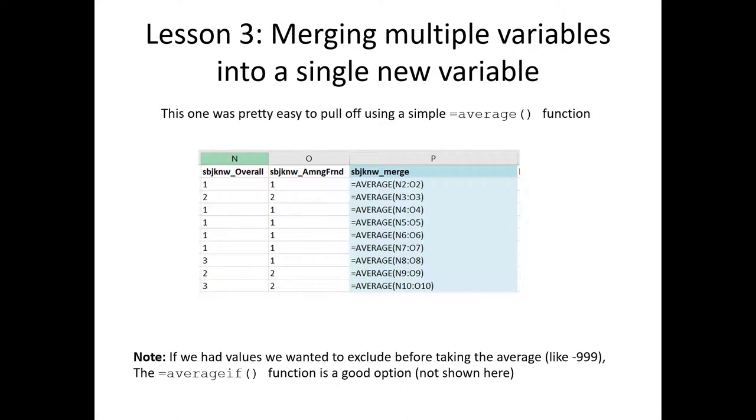It should be noted in this example we didn't have any values we wanted to exclude. These particular questions didn't have an 'I don't know' or 'does not answer' style negative 999 or negative 9 response, so we didn't have to worry about excluding some answers to survey questions. If we wanted to do that, we could have used an average if function. I don't cover that in this video, but it works just the same as all the other if functions that we've shown previously. It's easy to check up on with a simple Google.